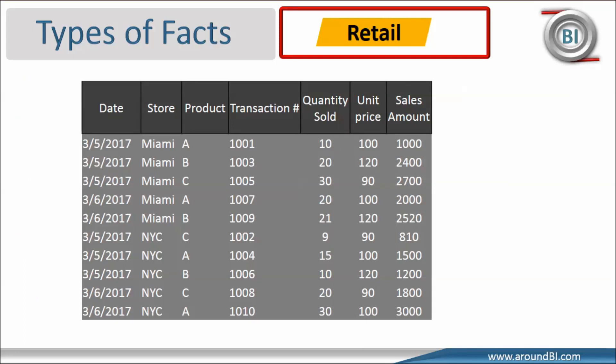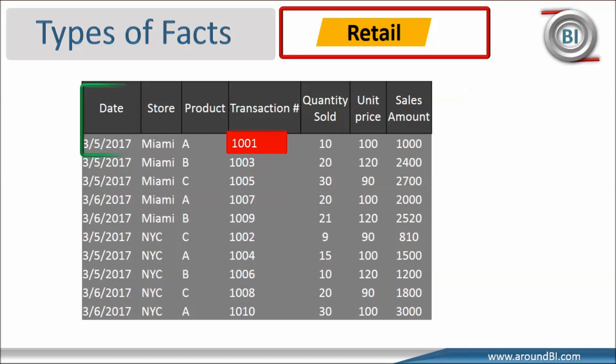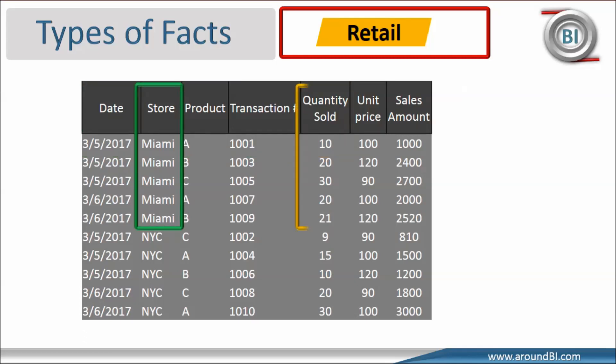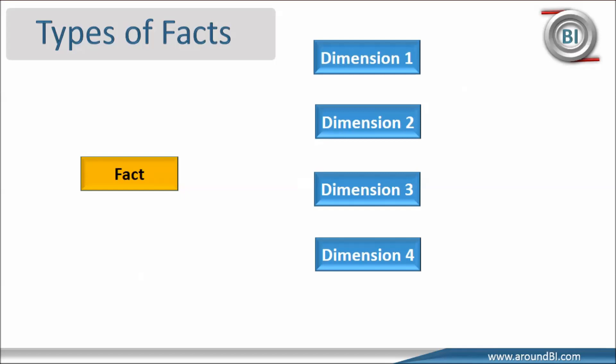I am picking just 10 records for demonstration. Our basic expectation from facts is to do computation to find business numbers. For example, if I check the data set for transaction number 1001, it tells about business value that happened on March 5th for store Miami. The value for quantity sold is 10. With the data available, we can find the total number of products sold from store Miami by adding up quantity sold for this store group. Here we can safely say that quantity sold, which is a fact, can be summed up or aggregated for the store dimension. That means aggregation is a nature or property of facts. This nature of aggregation of facts for dimensions divides facts into three groups — three different fact types.